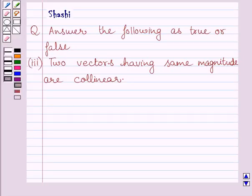Hello and welcome to the session. I am Shashi and I am going to help you with the following question. Answer the following as true or false: Two vectors having same magnitude are collinear.